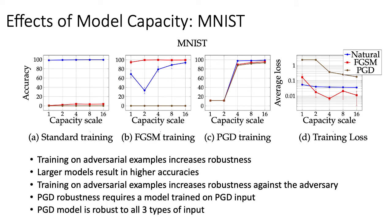The authors investigate the robust effects of bigger models, which are models with more parameters. They test on three models: a standard model, a model trained on FGSM input, and a model trained on PGD input. These are the results for the MNIST dataset. From these graphs, we can see that larger models perform better and training on adversarial input increases robustness against that adversary. Also, in order to attain high accuracy for PGD, the model must be trained on PGD input and be sufficiently large. The model trained on PGD input had high accuracy for all three types of input. The authors suggest that PGD is the strongest known first order attack and that models robust to PGD are robust to all other first order attacks as well.